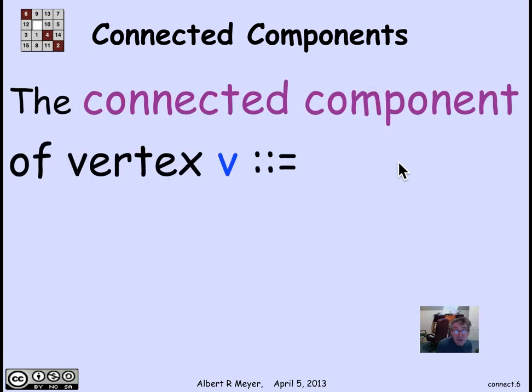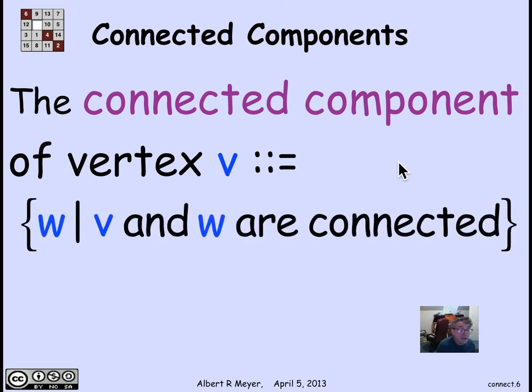The formal definition of the connected component of a vertex V is simply all of the vertices W that are connected to V. And if you look at these connected components, they define an equivalence relation on the vertices, of course, because a connected component is a block of the equivalence relation. It's a block of the partition associated with the equivalence relation.